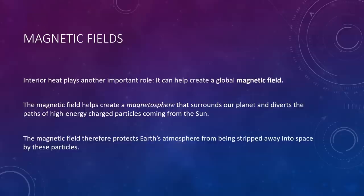Interior heat plays another important role. It can help create a global magnetic field. Earth's magnetic field determines the direction in which a compass needle points, but it also plays many other important roles. The magnetic field helps create a magnetosphere that surrounds our planet and diverts the paths of high-energy charged particles coming in from the Sun. The magnetic field, therefore, protects Earth's atmosphere from being stripped away into space by the solar particles. Many scientists suspect that this protection has been crucial to the long-term habitability of Earth, and hence to our own existence.